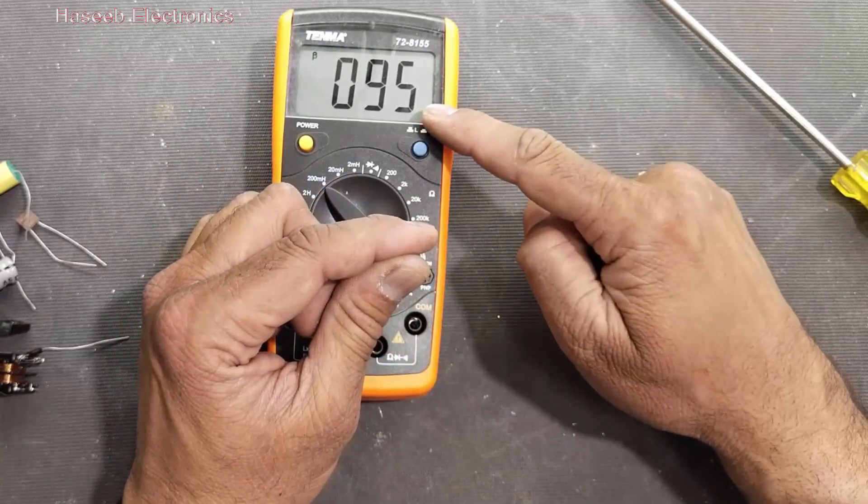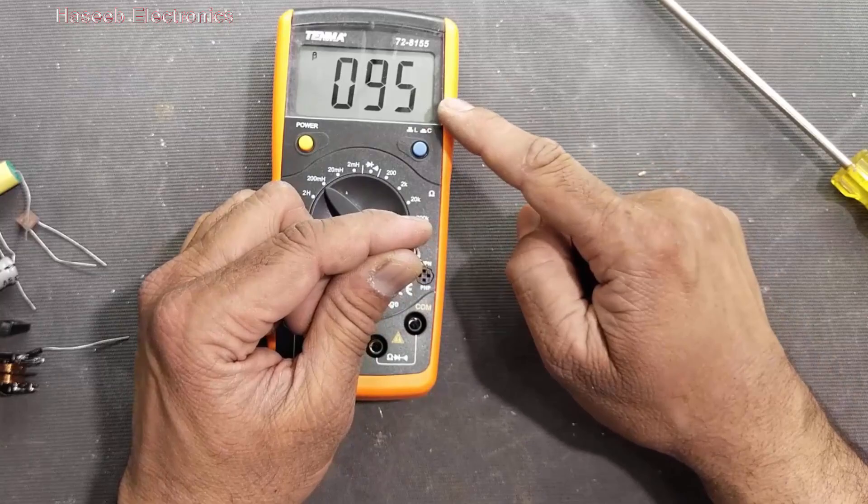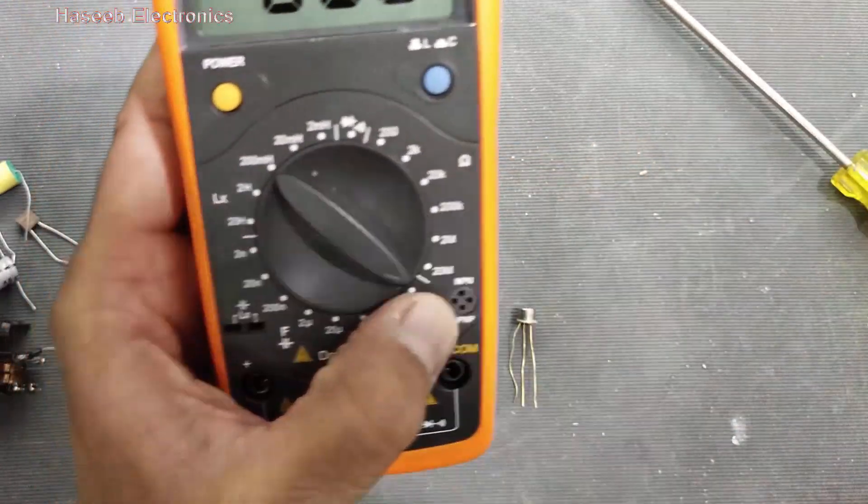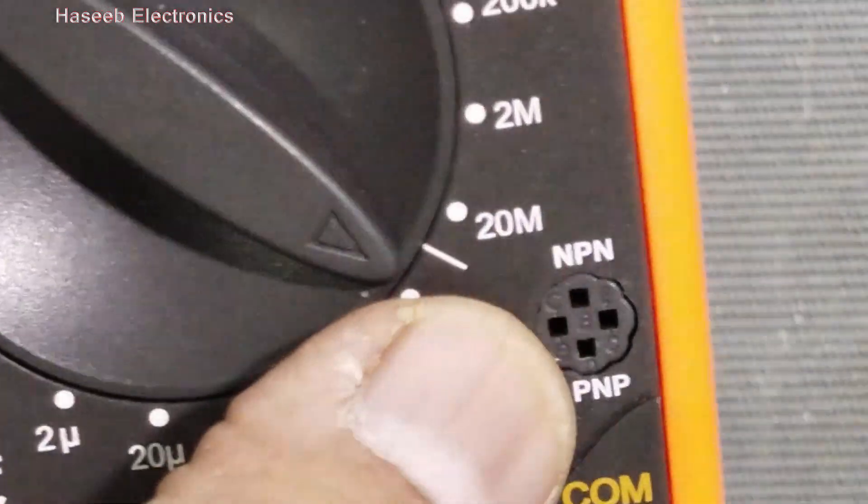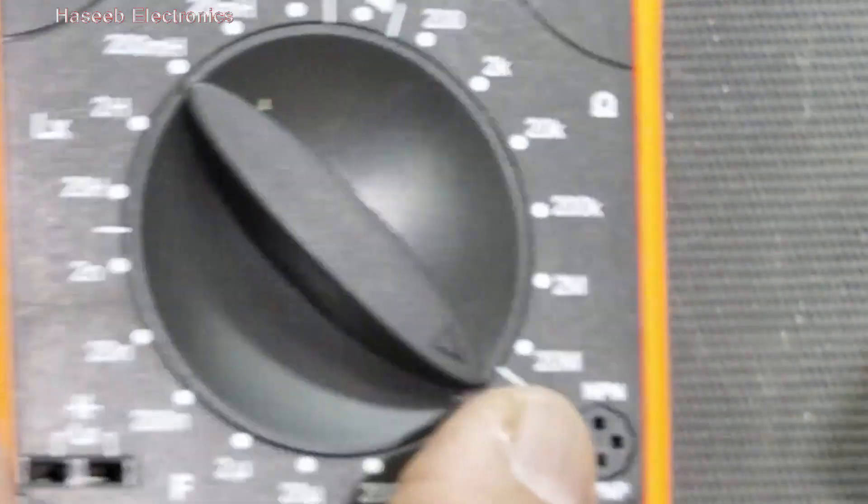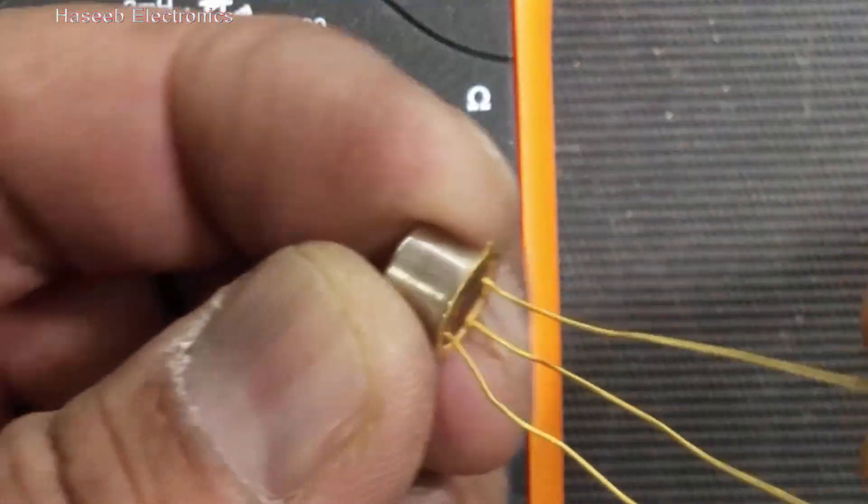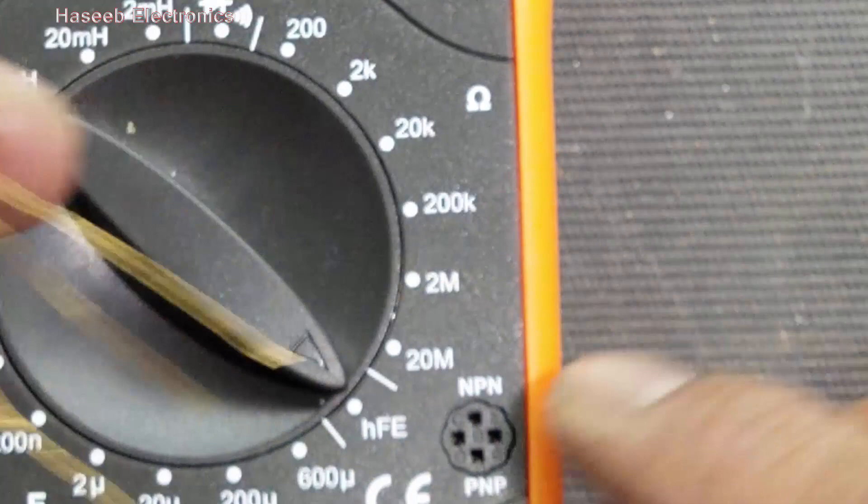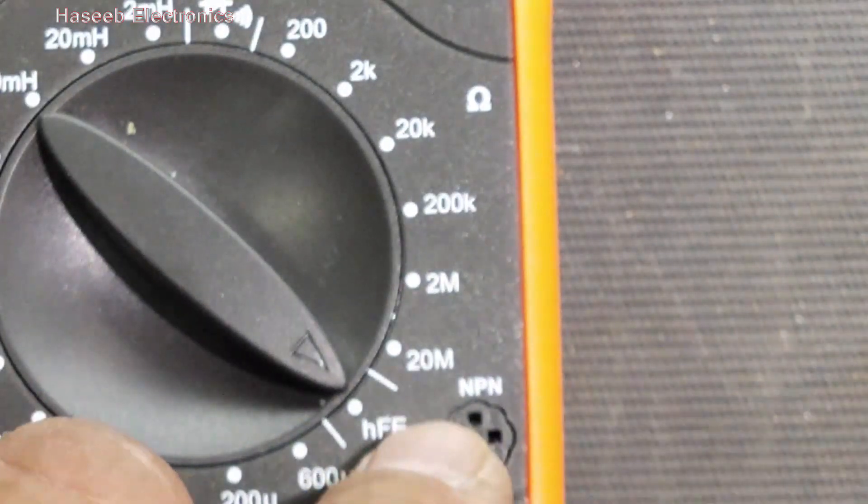So here it is giving 95, so this is the gain of the transistor. And it is showing emitter, base, and collector. So emitter, this pin is emitter, this one is base, and this one is collector. And type of transistor is NPN.